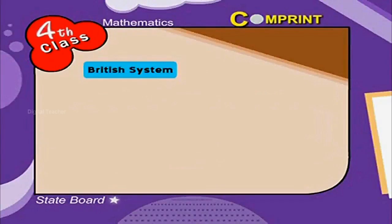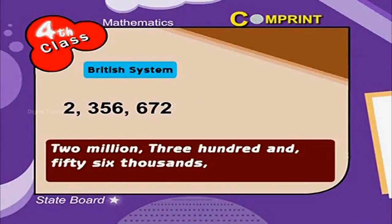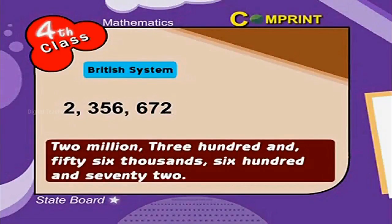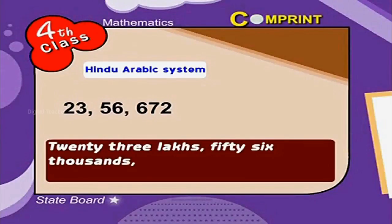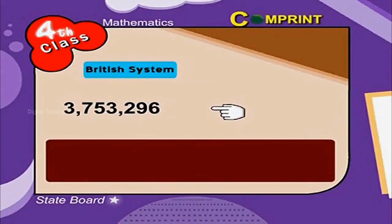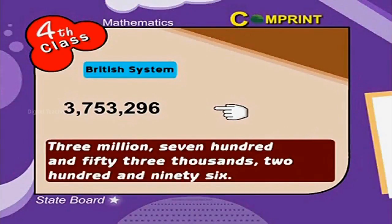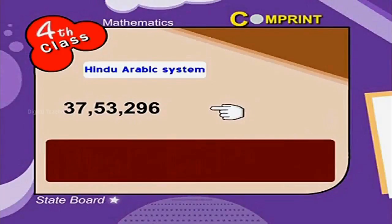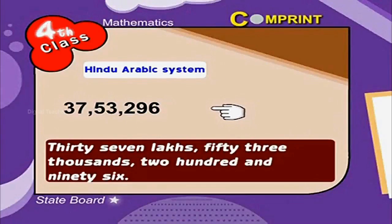In the British system, this number is written as 2,356,672. The same number in the Hindu-Arabic system is written as 23,56,672. Let us see a few more examples. Another example: 3,753,296 in the British system, and 37,53,296 in the Hindu-Arabic system.